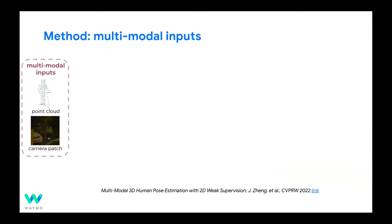What we do is leverage a less expensive form of labeling: instead of labeling 3D keypoints, we label 2D keypoints. Labelers just view the image and click a few points on it.